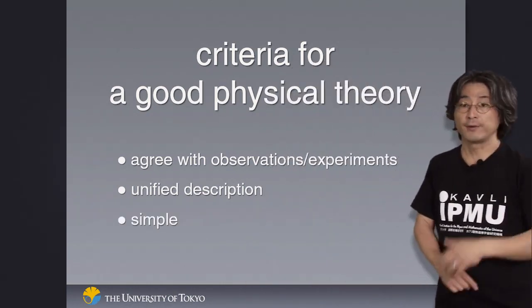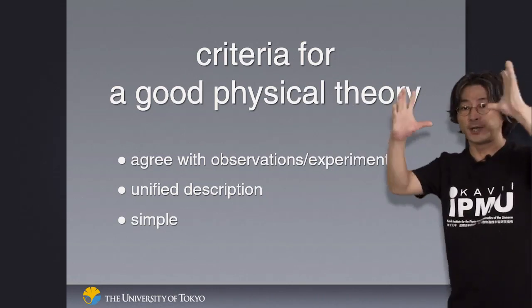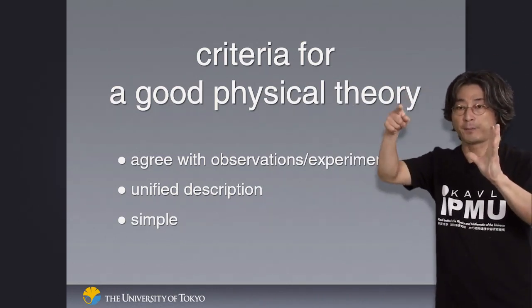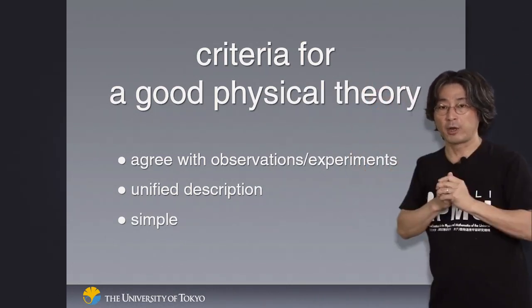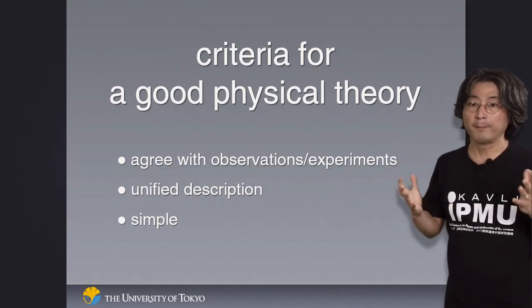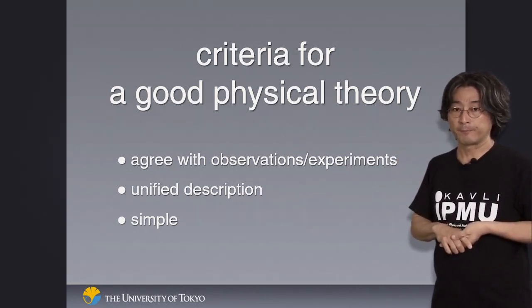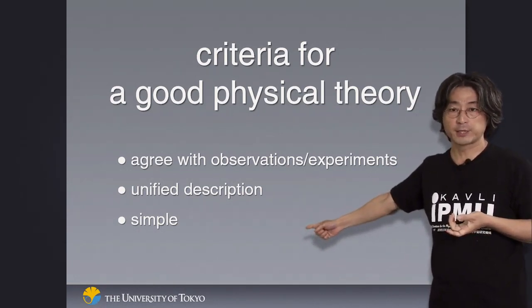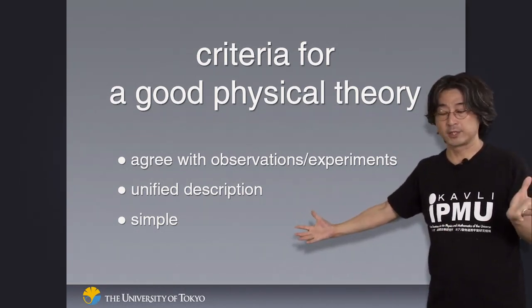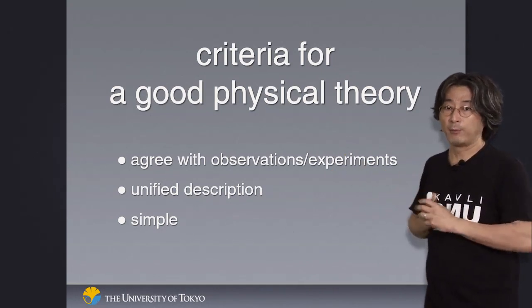Also, we want the theory to be simple. If you have to put an epicycle on top of it, yet another epicycle on top of it, and so on, it's a very complex theory. At some point, you don't think that should be the right theory. We are always looking for a simple explanation to many phenomena we see. That is one of the criteria for a good physical theory.